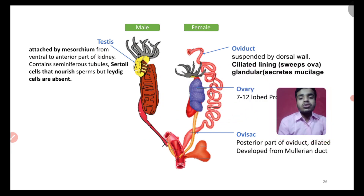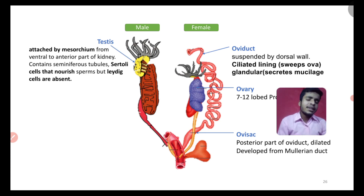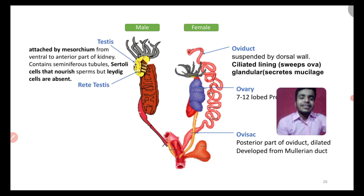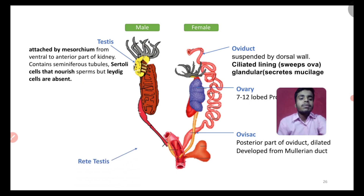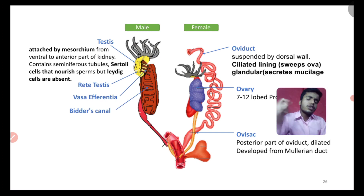The primary sex organ in the male frog is the testis. The testis is attached to the kidney by the mesorchium. The testis contains Sertoli cells that produce sperm. Leydig cells are also present in the testis — Leydig cells are also called interstitial cells, as in mammals. Next is the rete testis, where the seminiferous tubules open into one common area, from which sperm exit.